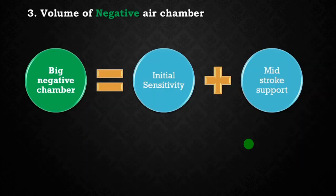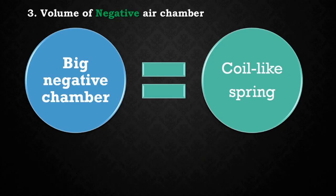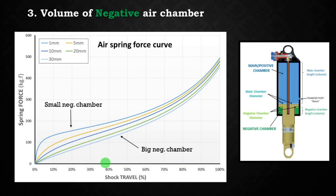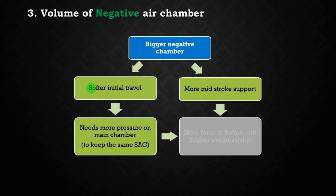A big negative chamber will provide much more initial sensitivity and also more mid-stroke support. Here are examples of shocks with big negative chambers, including the Debonair with its secondary negative chamber. This graph shows what happens to the net air spring curve when you change the negative chamber volume. A very small negative chamber produces a curve with a very stiff initial shoulder, while a very big negative chamber produces a very linear and soft curve in the first part of the travel.